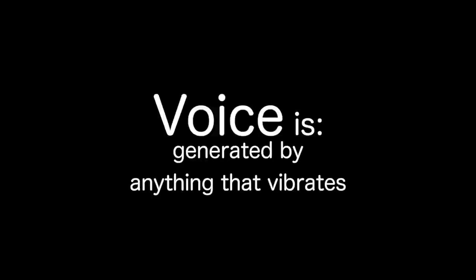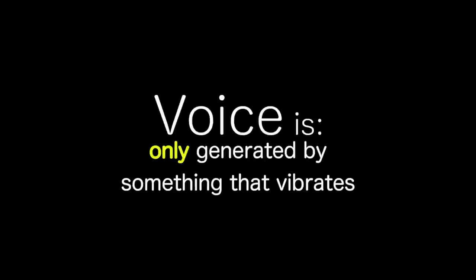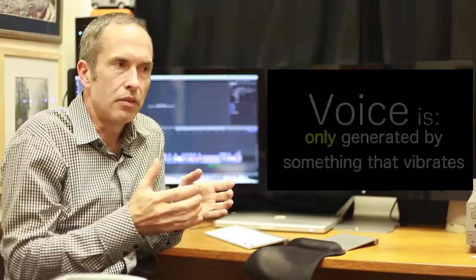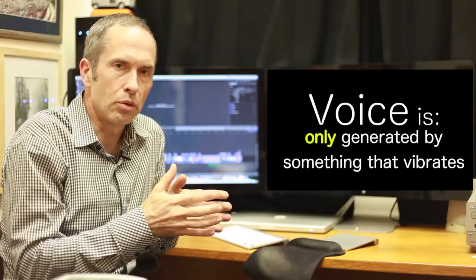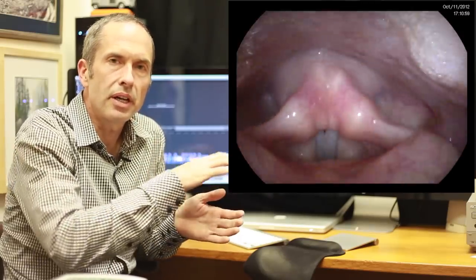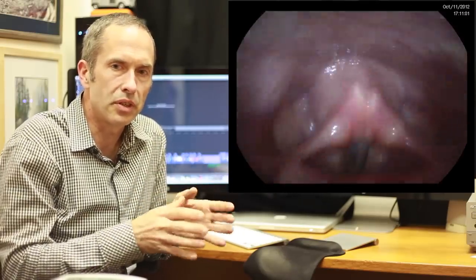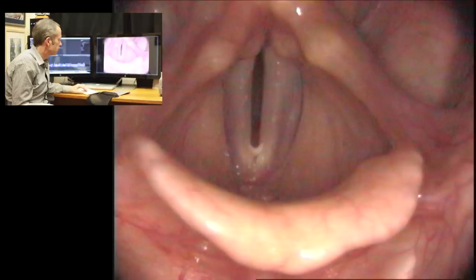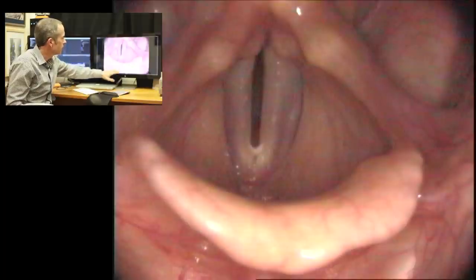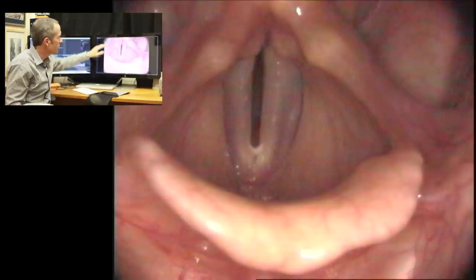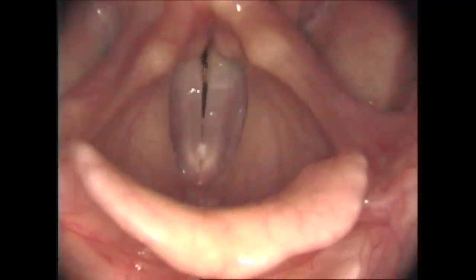We know that voice is generated by anything that vibrates, and the corollary of this statement is that voice is only generated by something that vibrates. So if we're focusing in on the vocal cords, in a way, we can ignore everything else that's going on in terms of diagnosing a voice problem. So here's a set of vocal cords. We're looking down from above. Vocal cords are the two structures in the middle. Front is at the bottom, and back is at the top.